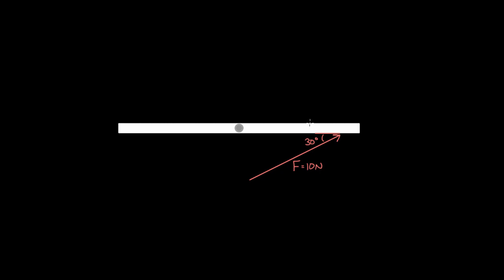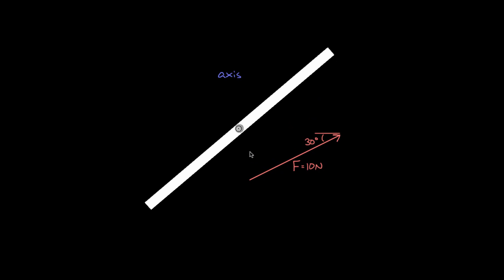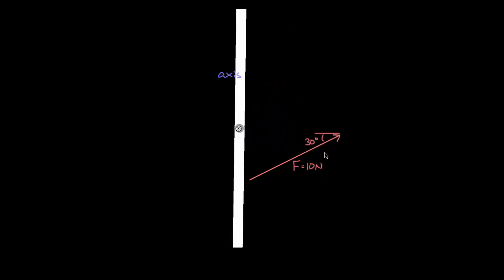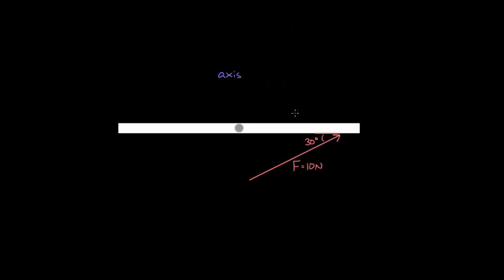Specifically, the problems I got most anxious about were where the force was at a weird angle. So let's figure out how to find the torque from this 10 Newton force exerted at this angle of 30 degrees. One of the first things you want to do when finding the torque is identify the axis — the point about which the object is going to rotate. Let's say the object rotates around the center, so the center here would be the axis.